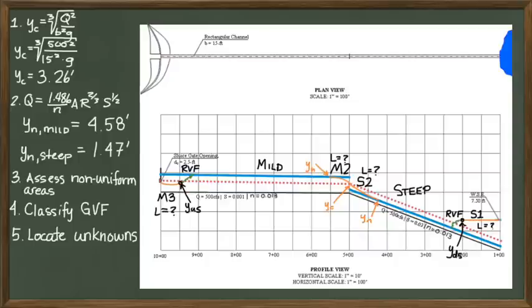However, if there is a jump, then the last unknown is the length of the M3. With the channel flow assessed and the unknowns identified, you are ready to start your calculations.